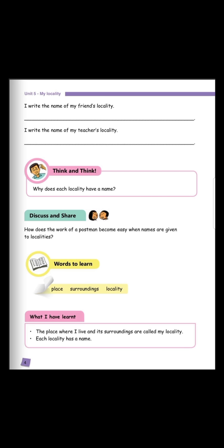Today we are going to continue with Unit 5, my locality. What is a locality? A locality is the place where a person lives and its surroundings. C'est l'endroit où vous habitez. Let us work out on page 4. I write the name of my friend's locality. So you are going to pick and choose a friend of yours and write down the name of his or her locality.